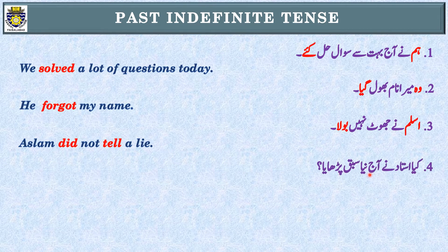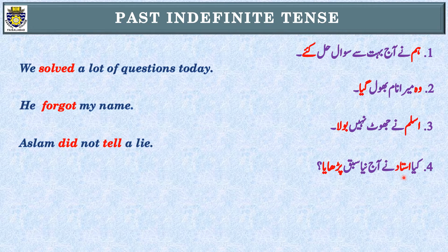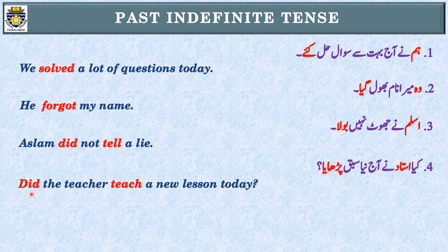Sentence number four: 'The teacher taught a new lesson today.' First step: identification of tense — past indefinite tense. Second step: the subject is 'the teacher.' Simple sentence: 'The teacher taught.' Negative: 'The teacher did not teach.' Interrogative: 'Did the teacher teach a new lesson today?'